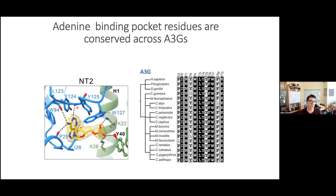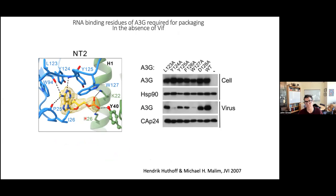The residues that A3G uses to contact RNA are strictly conserved, consistent with these residues playing an essential role for APOBEC3G function. In fact, Michael Malum's lab has mutated these residues using an HIV virus that is VIF-deficient, so you can look at A3G packaging. When residues that contact RNA are mutated — such as tyrosine-125 or tryptophan-127 — you see reductions in A3G packaging. These are essential residues for APOBEC3G function.